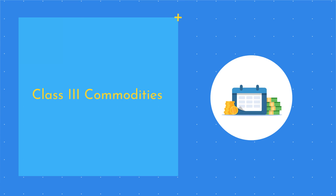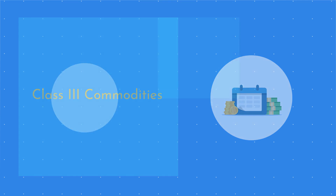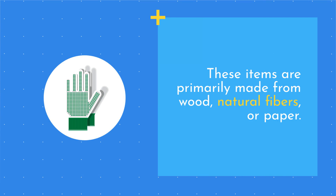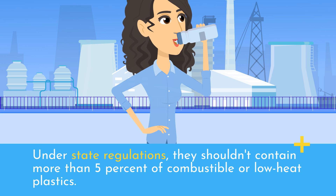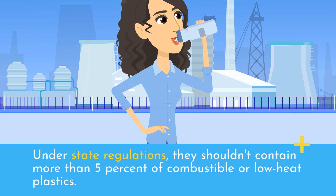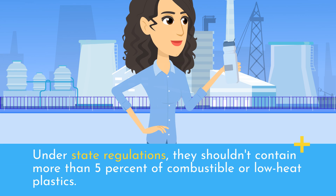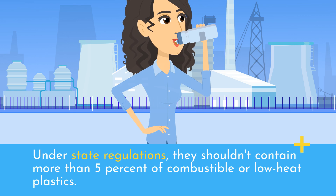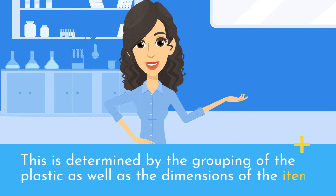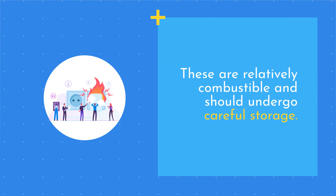Class III Commodities: These items are primarily made from wood, natural fibers, or paper. Under state regulations, they shouldn't contain more than 5% of combustible or low-heat plastics. This is determined by the grouping of the plastic as well as the dimensions of the item. These are relatively combustible and should undergo careful storage.